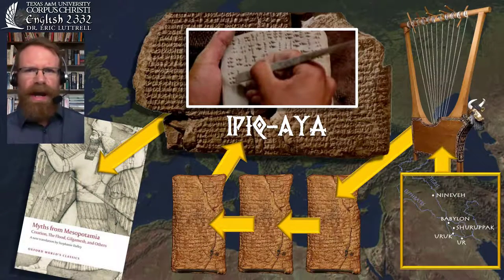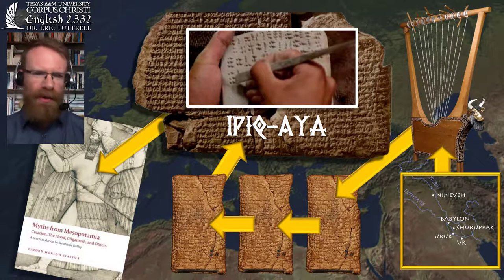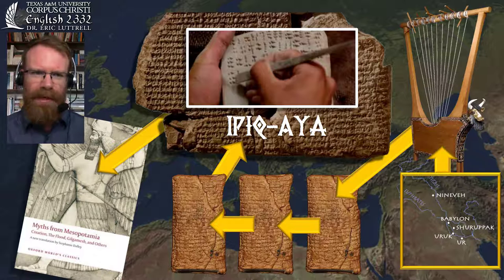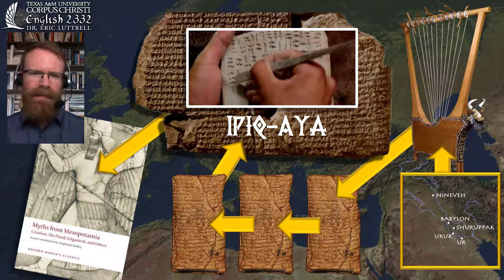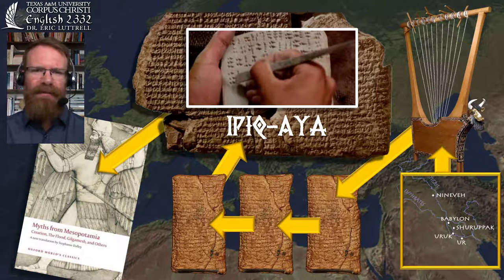In summary, from the fragments written by Ipiq-Aya in the Old Babylonian version, we have the most complete version of Atrahasis. Stephanie Dalley included the Old Babylonian version and at least two Standard Babylonian tablets — these tended to create doublets, where the story would start, stop, and restart with conflicts. This might seem frustrating, but for our purposes it's a very important lesson we'll apply to every text we read in this class.